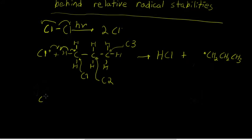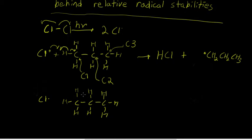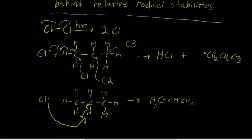Now let's say we had abstraction at C2, at this carbon. If we had abstraction at this carbon, here's what would happen — we'd have homolytic cleavage and you'd get a secondary propyl radical.